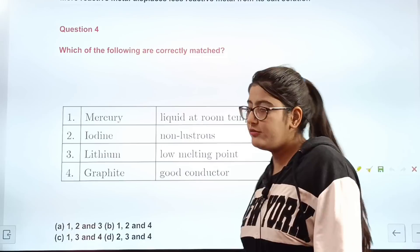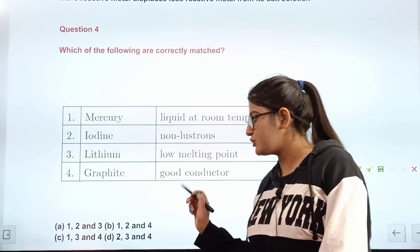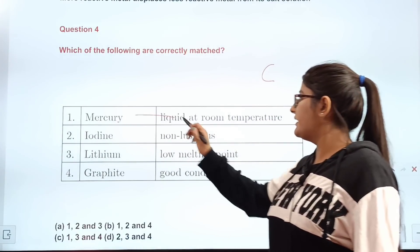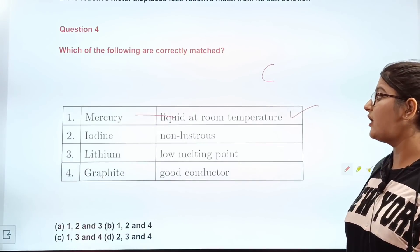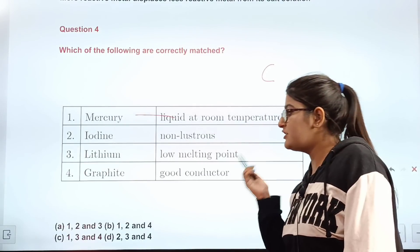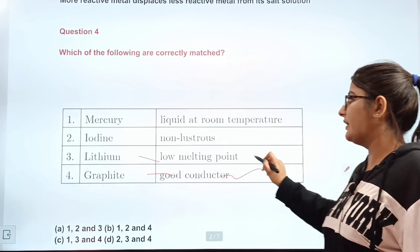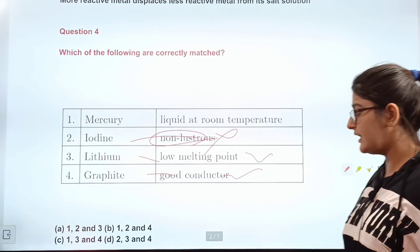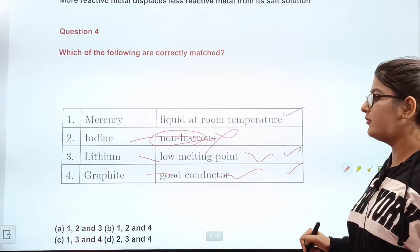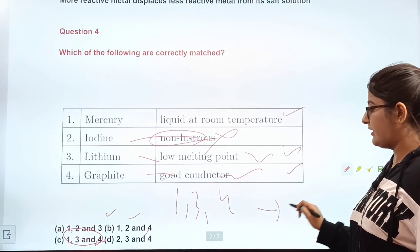Question number four: which of the following is correctly matched? The four matchings given are: 1) mercury is liquid at room temperature, 2) iodine is non-lustrous, 3) lithium has a low melting point, and 4) graphite is a good conductor. Matching 1, 3, and 4 are correct — iodine is actually lustrous, so matching 2 is wrong. The correct answer is C, which gives matchings 1, 3, and 4.